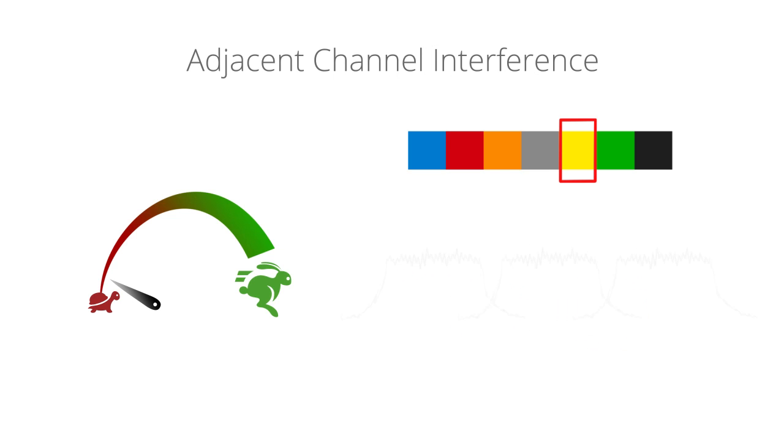With filtering, adjacent channels are cleaned up and they no longer interfere with the desired channel and throughput is improved.